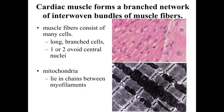The next type of muscle we're going to look at is cardiac muscle. Cardiac muscle forms a branched network of interwoven muscle fibers within the heart. The muscle fibers within the heart actually consist of many individual cells. In skeletal muscle, individual cells fuse together into a very long, unbranched fiber. Within cardiac muscle, we have long cells that are much smaller than skeletal muscle cells, and the cells become branched, connecting with neighboring cells to form these long fibers.